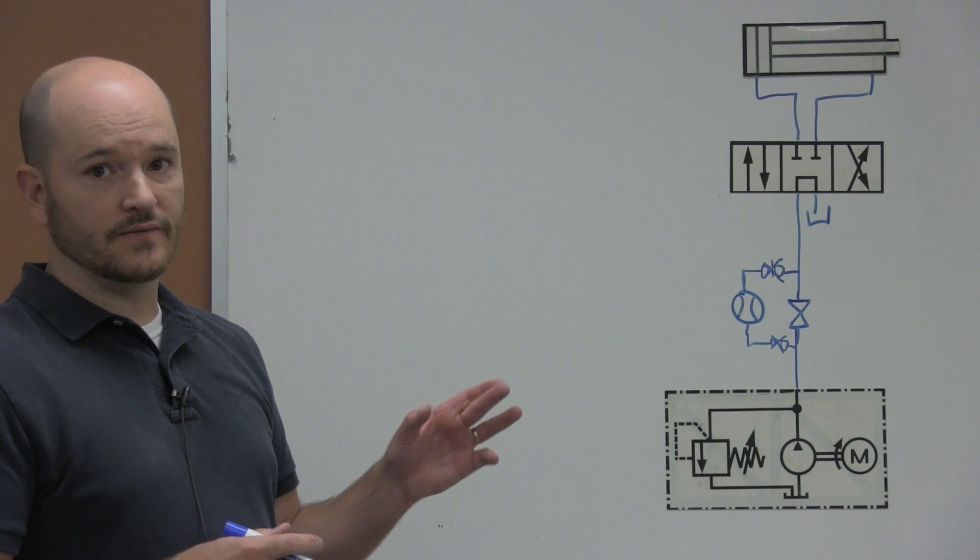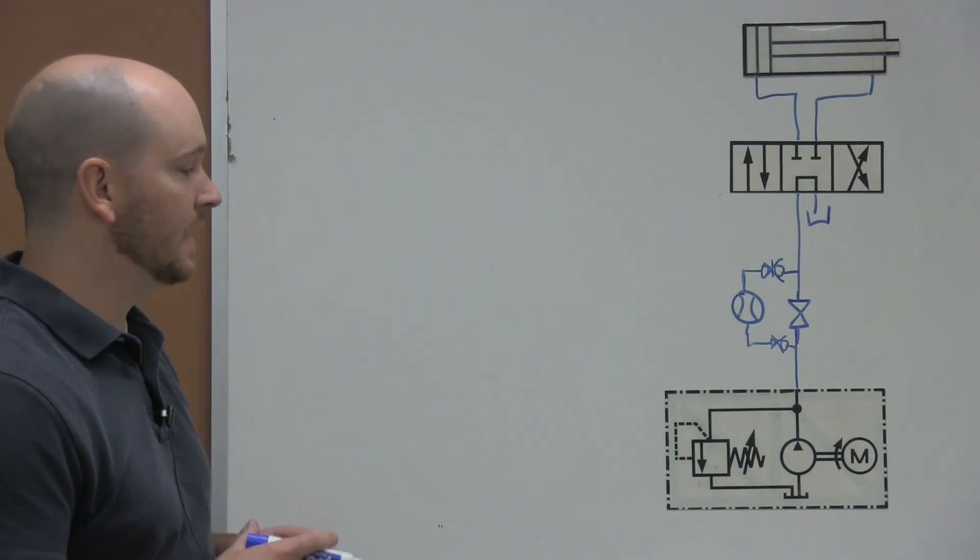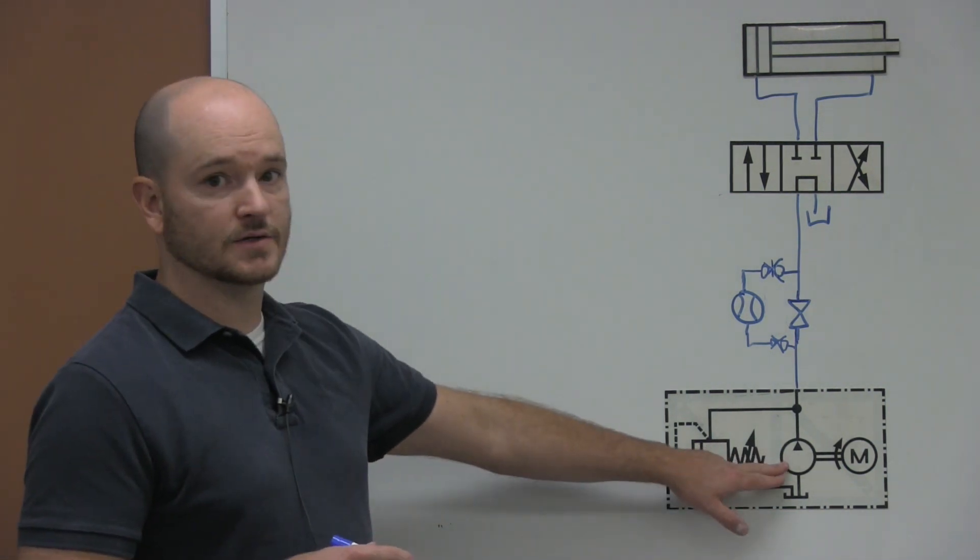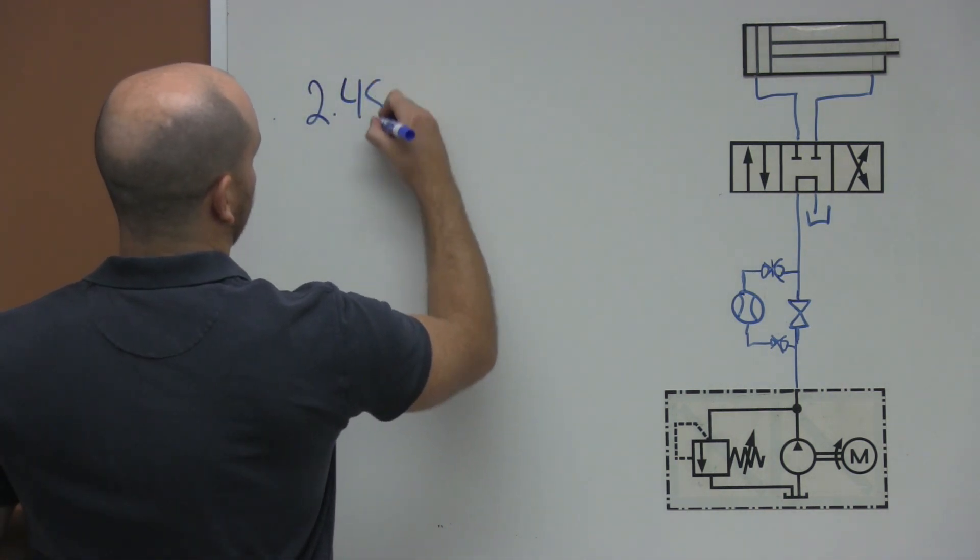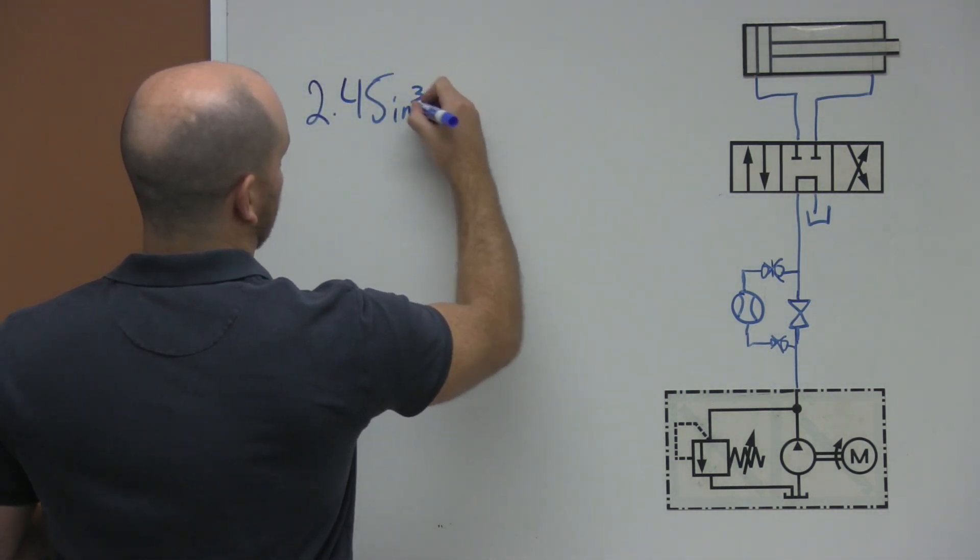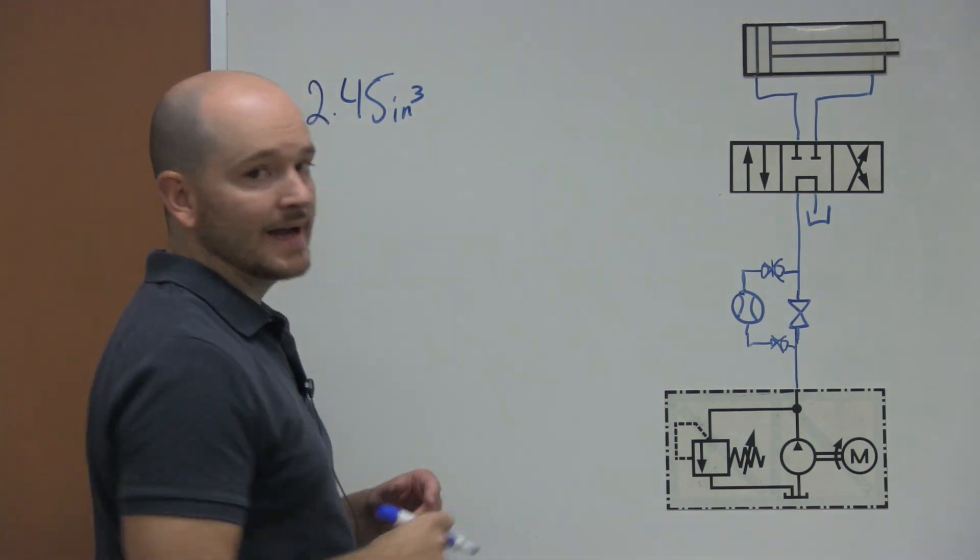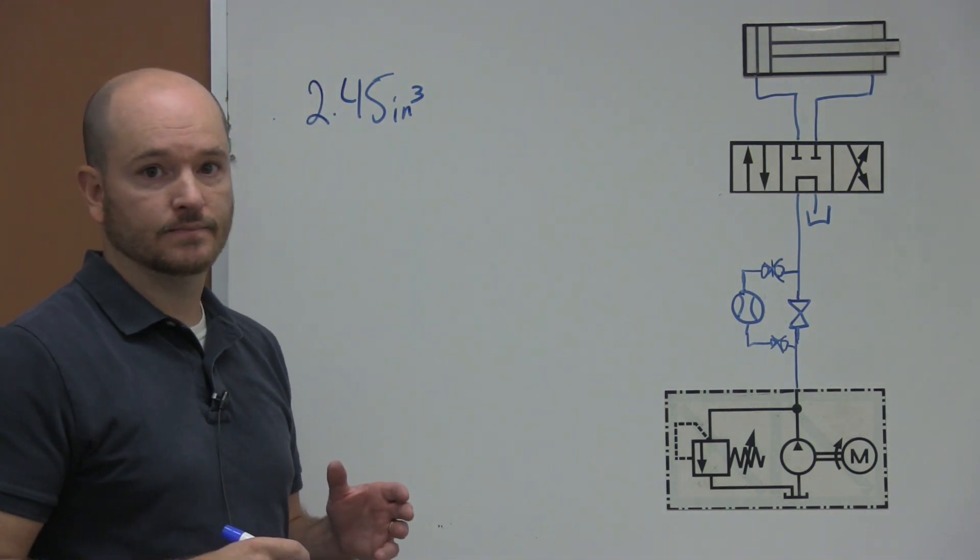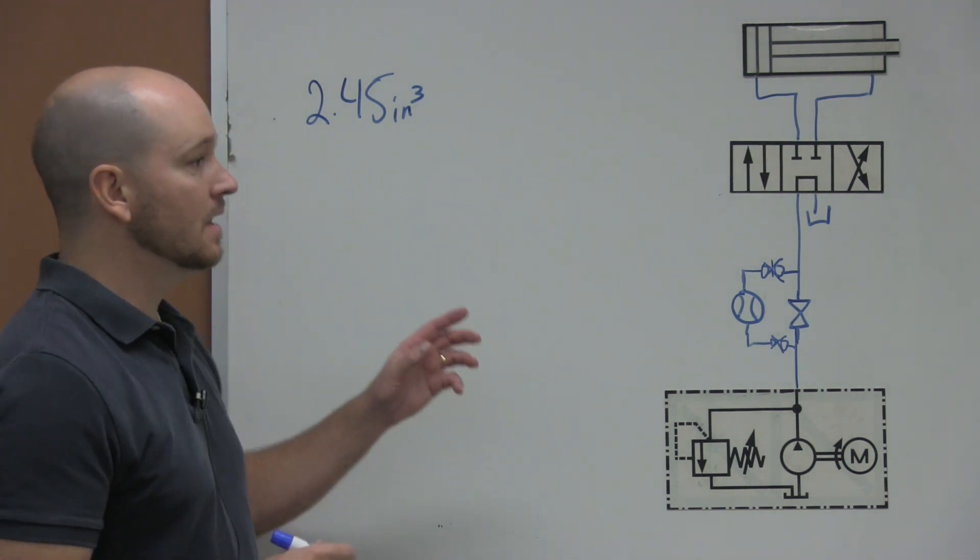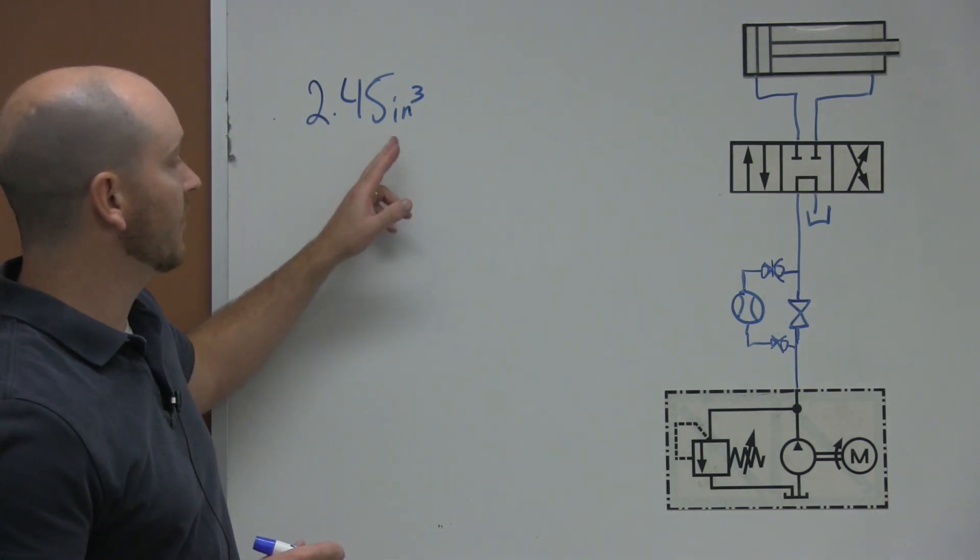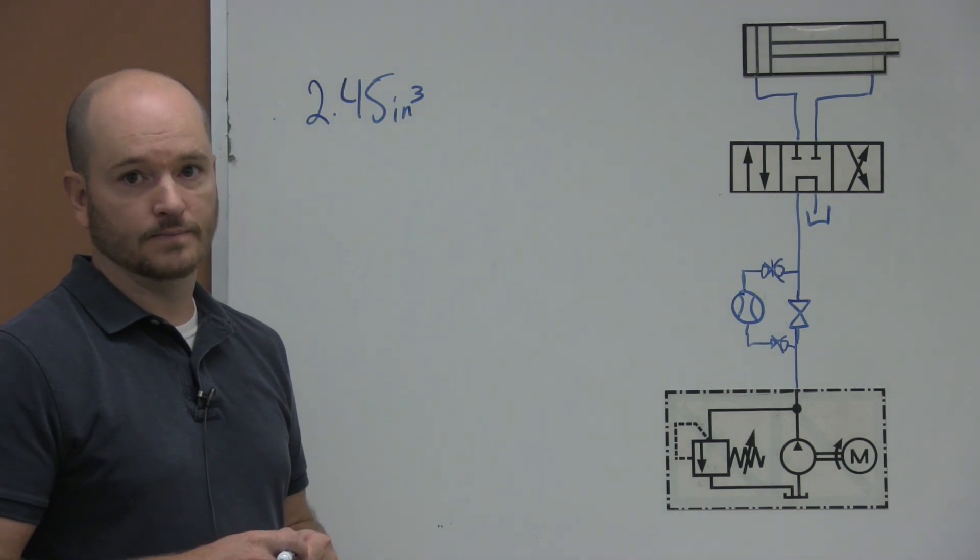Let's say we've done that and figured out the displacement for the pump in our system is 2.45 inches cubed per rotation. So every time it spins 360 degrees, the pump should move 2.45 cubic inches of oil.